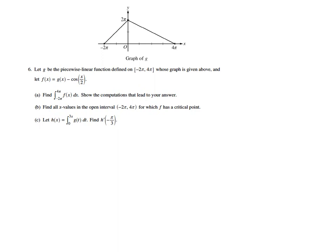Alright, real quick, let's look at part c. Let's say real quick because it shouldn't be too bad. They want h prime of negative π over three if h is equal to the integral from zero to three of g of x.